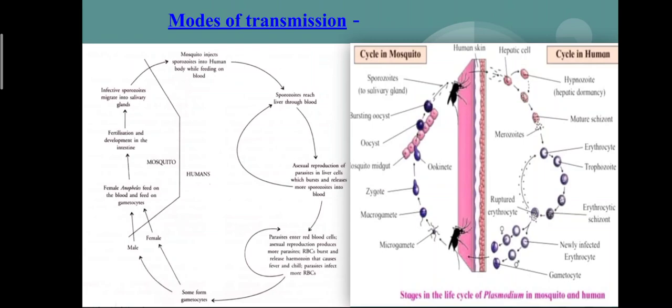These merozoites form within erythrocytes and function as gametocytes — a process known as gametogony. Gametocytes, if taken up by the female Anopheles from the human being, undergo fertilization in the gut of the mosquito. A diploid zygote forms, which transforms into an oocyte. This oocyte forms a large number of haploid sporozoites through meiosis, simply known as sporogony. The sporozoites migrate to the salivary glands of the mosquito and are then ready to infect a new host.